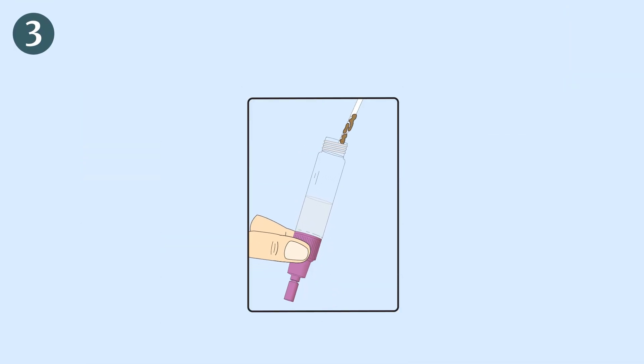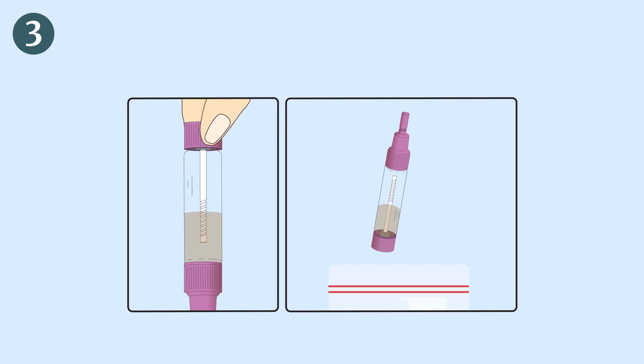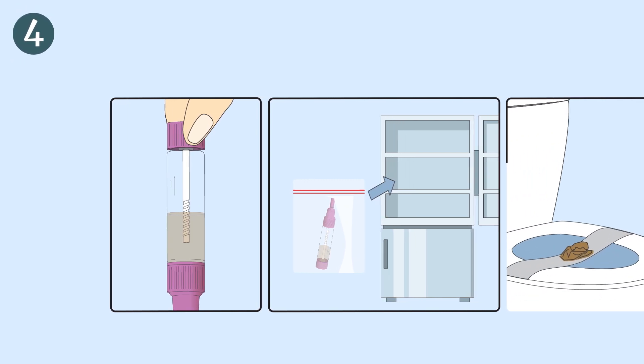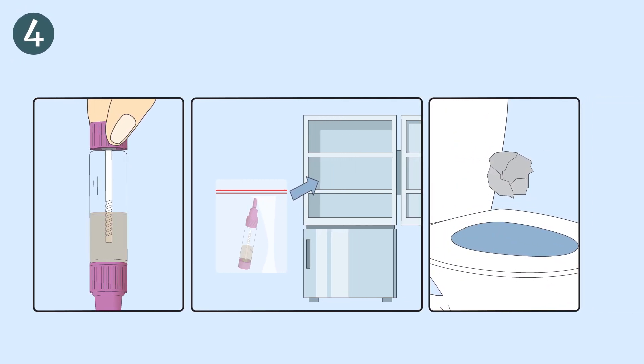Put the white cap containing the feces sample back in place onto the dilution vial. Screw it firmly and shake well to re-suspend the feces sample. Put the sample dilution vial back into the plastic bag and keep it in the refrigerator. Remove the collection paper strip and dispose it in the toilet.